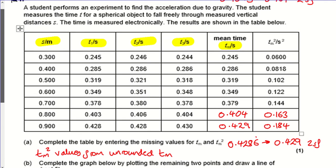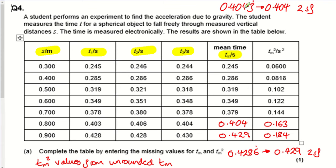First, they ask you to use their set of raw results for the 0.8 m drop and work out the average. For 0.8 m you get 0.4043 recurring, which rounds to 0.404 to three significant figures. Similarly for the 0.9 m drop, the three numbers average to 0.4286 recurring, which rounds to 0.429. Then you square both values to get your t-squared measurements.